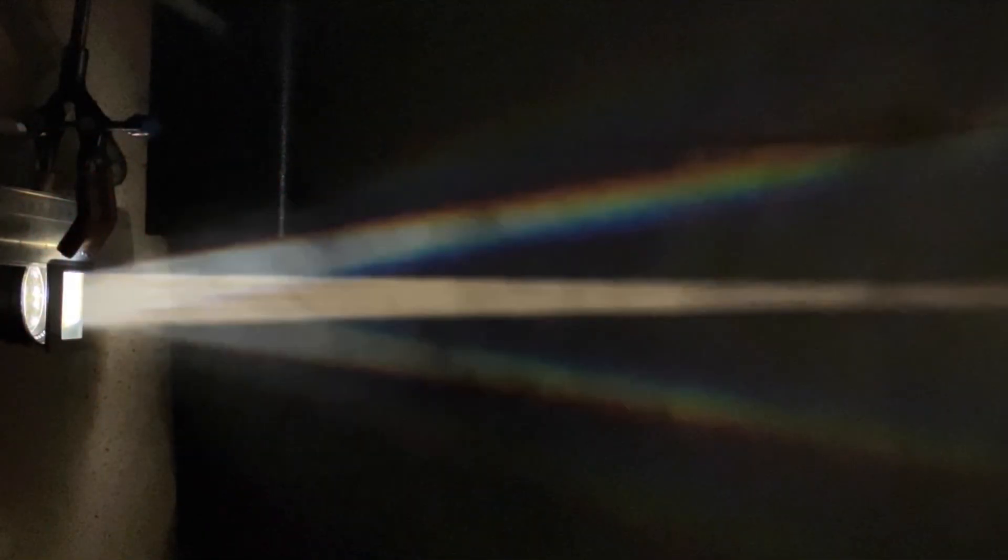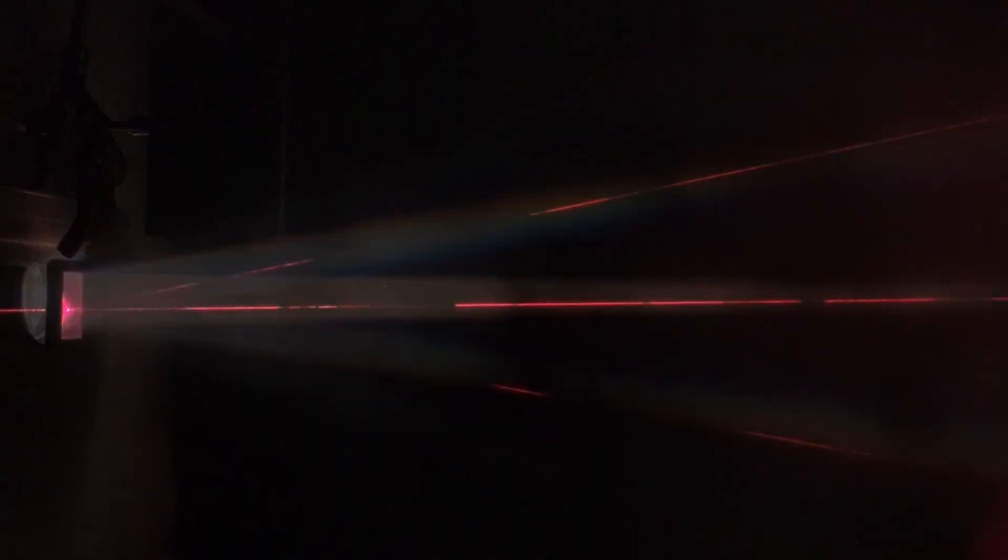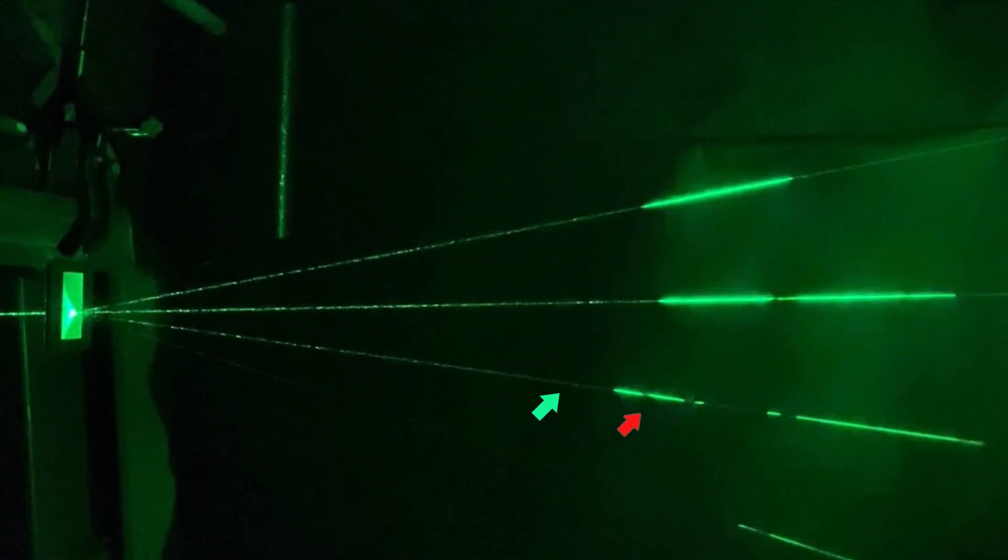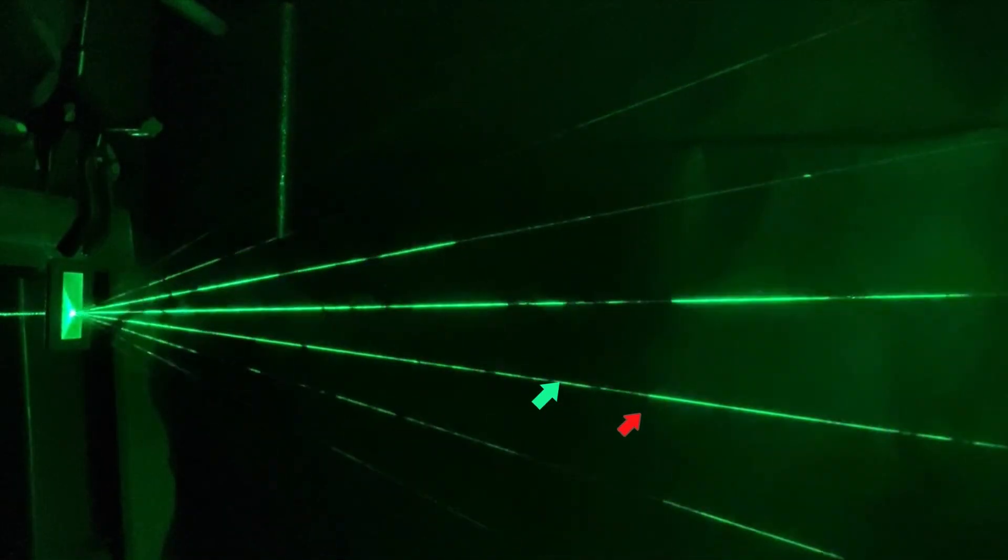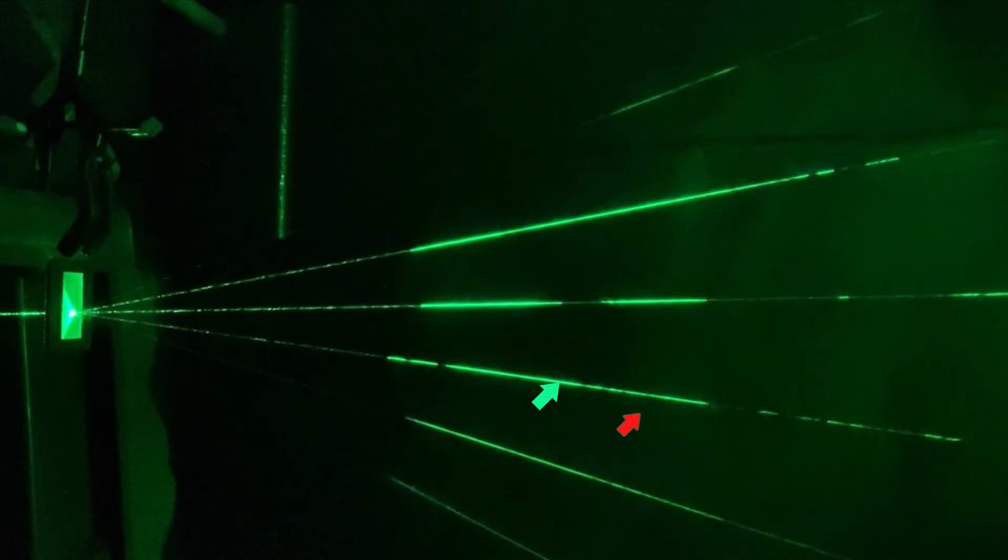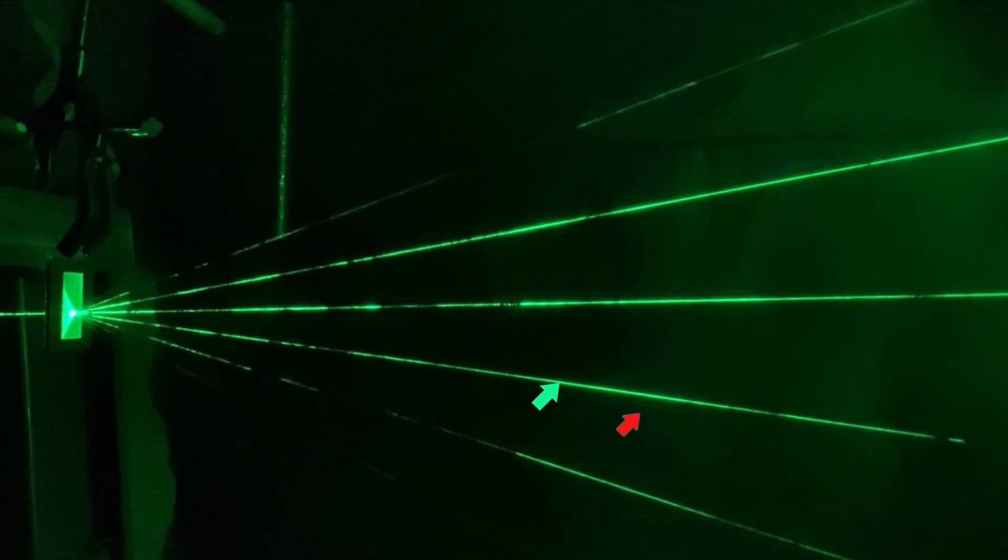Next, why do we get the higher-order beams, and why do they consist of spectra? Alternating between red and green lasers and white light, we can see that the first-order beams occur at a smaller angle for green light than for red light, and at even smaller angles for blue and violet light.